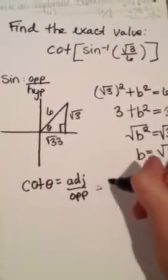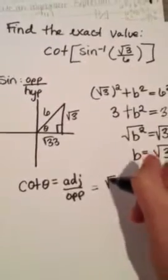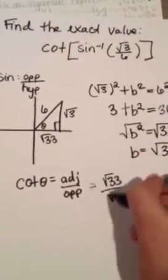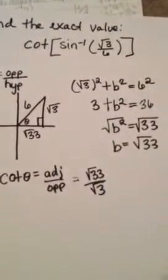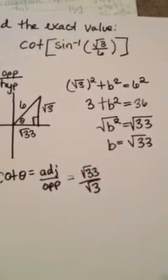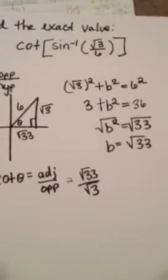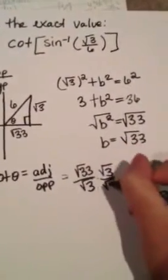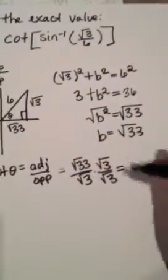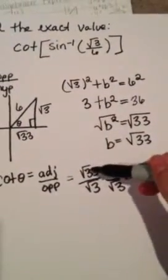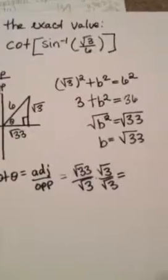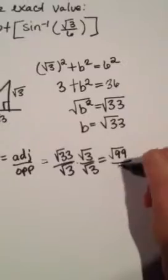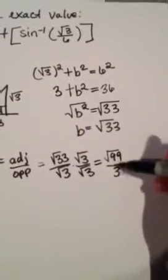So you do square root of 33 over square root of 3. Now you can't have a radical in the denominator, so you've got to times both sides by square root of 3 to get it by itself. You can multiply square root of 33 and square root of 3, so you'll get 99 all over 3, since you took the square root out of 3.